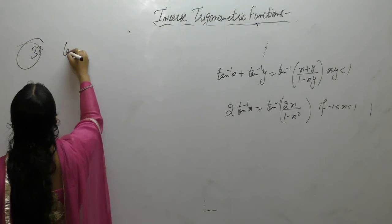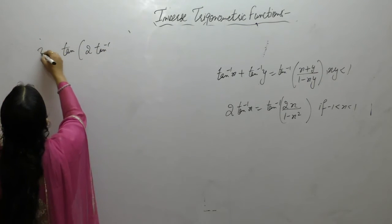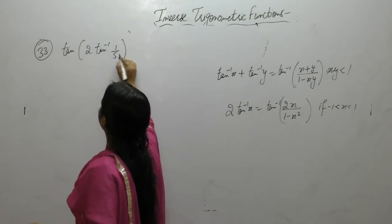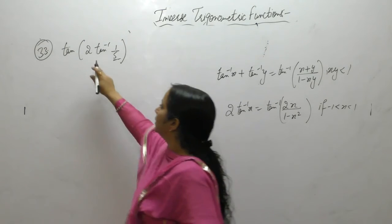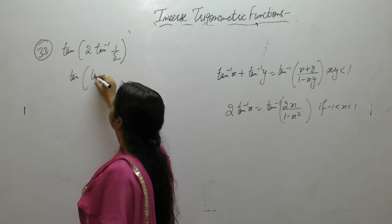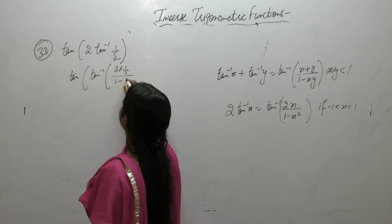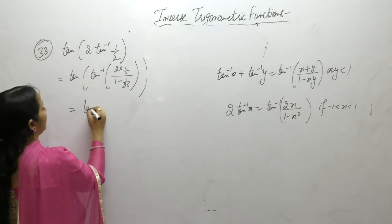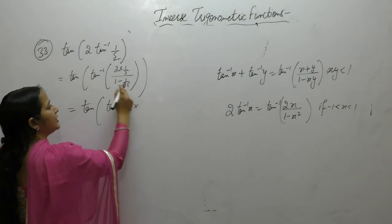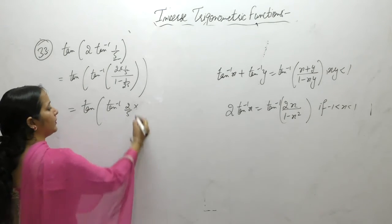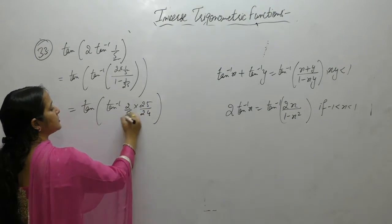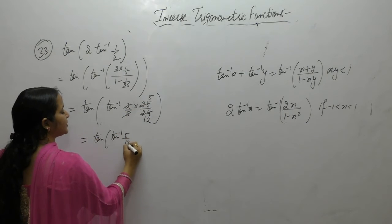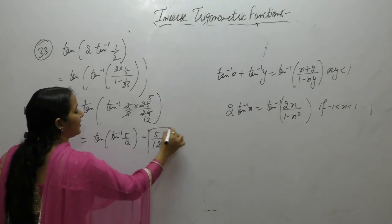Evaluate tan(2tan⁻¹(1/5)). Since 1/5 lies between -1 and 1, apply 2tan⁻¹x = tan⁻¹(2x/(1-x²)). We get tan(tan⁻¹(2/5 ÷ 24/25)) = tan(tan⁻¹(5/12)). Tan and tan⁻¹ cancel, giving the result as 5/12.